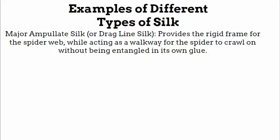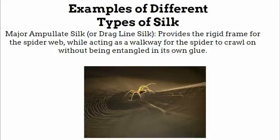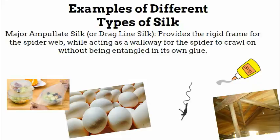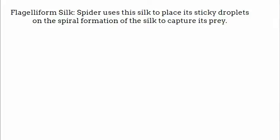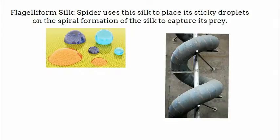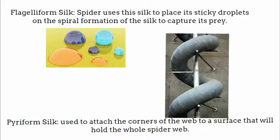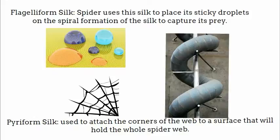There are several different examples of spider silk, the major one being major ampullate silk or dragline silk. This provides the rigid frame for the spiderweb while acting as a walkway for the spider to crawl on without being entangled in its own glue. The silk is also used as a lifeline for the spider in case it falls. Flagelliform silk is used to place sticky droplets on the spiral formation of the web to capture prey, while pyriform silk is used to attach the corners of the web to a surface that holds the whole spiderweb.